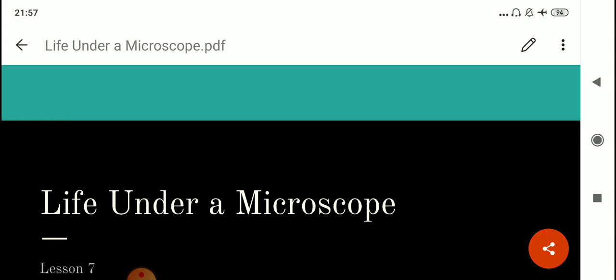So the small organisms, the unicellular organisms can be observed using a microscope. So in this chapter we will study about all the living organisms which can be observed under a microscope.